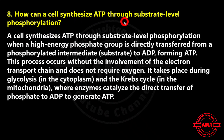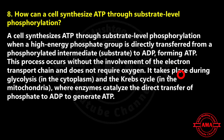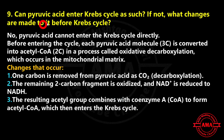Next: how can a cell synthesize ATP through substrate-level phosphorylation? A cell synthesizes ATP through substrate-level phosphorylation when a high-energy phosphate group is directly transferred from a phosphorylated intermediate to ADP, forming ATP. This process occurs without the involvement of the electron transport chain and does not require oxygen. It takes place during glycolysis in the cytoplasm and the Krebs cycle in the mitochondria, where enzymes catalyze the direct transfer of phosphate to ADP to generate ATP.